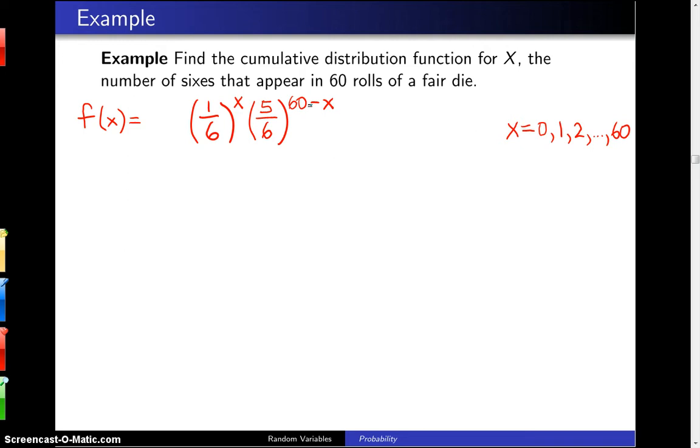Now that expression, which we have written down there, one-sixth to the x, five-sixths to the 60 minus x, is the probability of exactly x sixes and 60 minus x non-sixes in a particular order. So we want to account for the various orders, and we do that by putting 60 choose x out front. That is to say, there are 60 choose x different ways of placing the x sixes in positions amongst the 60 rolls.